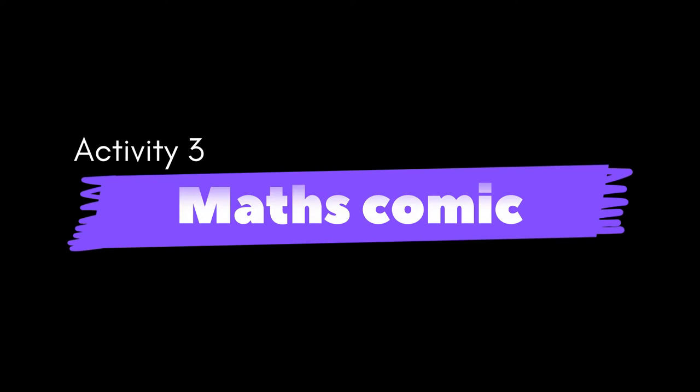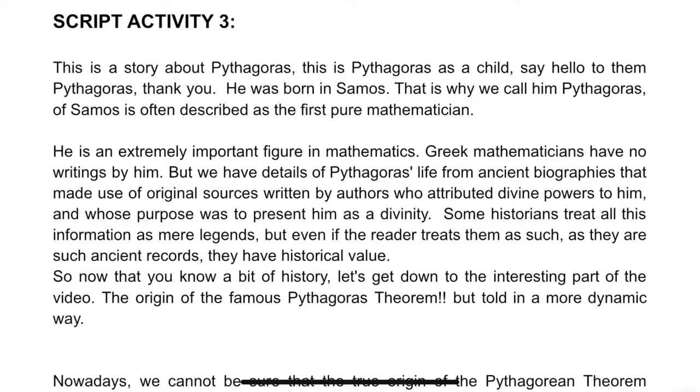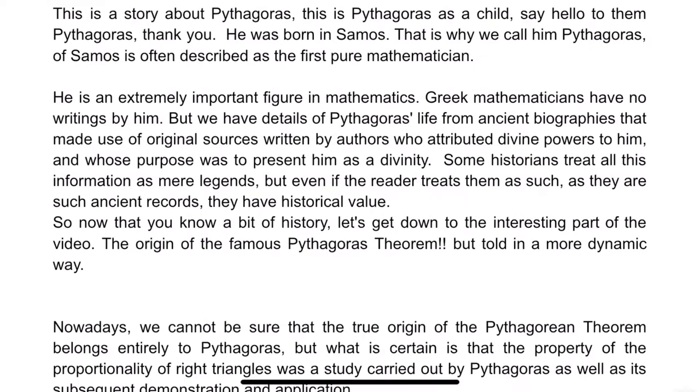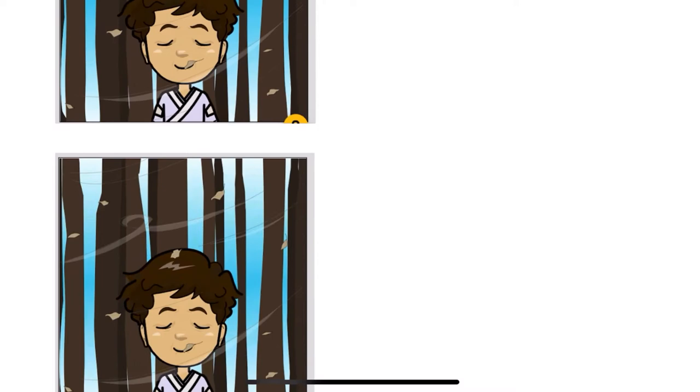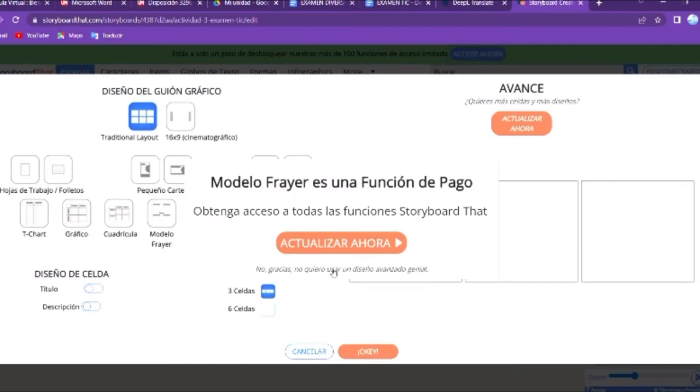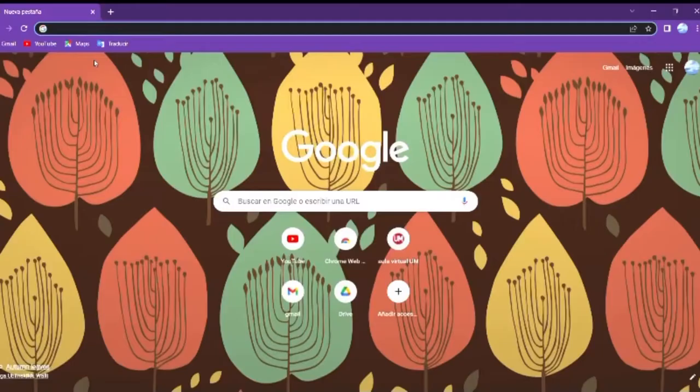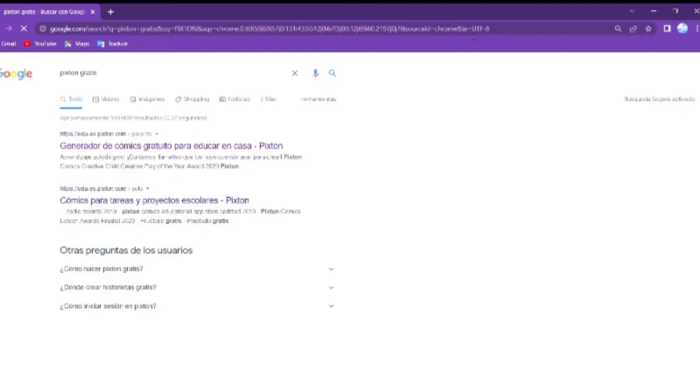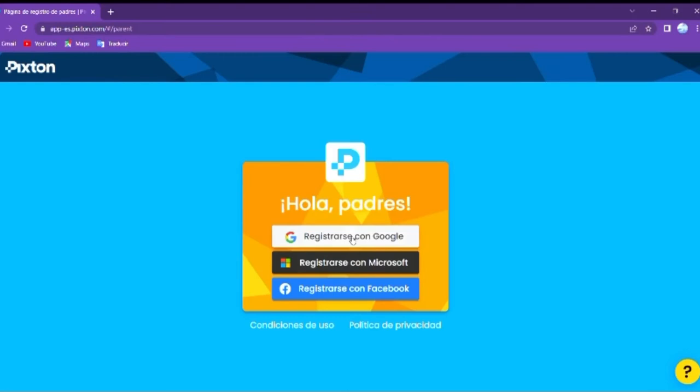And finally, we have the third activity, a maths comic. This activity relates English and mathematics, as in activity 2, and all the members of the group will have to write a story about a mathematician, where verbs in the past, present and future tense have to appear at least twice. They will make a video in a comic way, with a storyboard or, in my case, with a big stone. But let your students choose between those two tools.